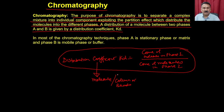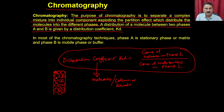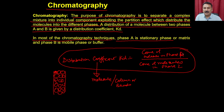Imagine filling a column with beads of different types, allowing molecules to distribute from the first layer to the last layer — that is how molecules get separated. In most chromatography techniques, phase A is the stationary phase or matrix, and phase B is the mobile phase or buffer. The distribution coefficient describes how a protein partitions between the matrix and the buffer.